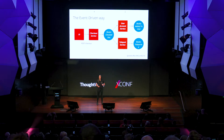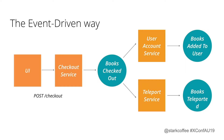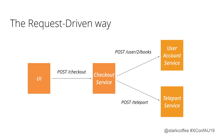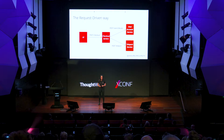The user account service, when it hears a book checkout event, adds the books to the account. The teleport service listens and figures out how to teleport those books. When we want to add the reminder service, we just get it to listen to the same event and do its job. This is called choreography. In an orchestra the conductor tells people what to do — that's orchestration. In choreography, the dancers learn what they have to do, and at performance time they're all just doing their thing and achieving something together.